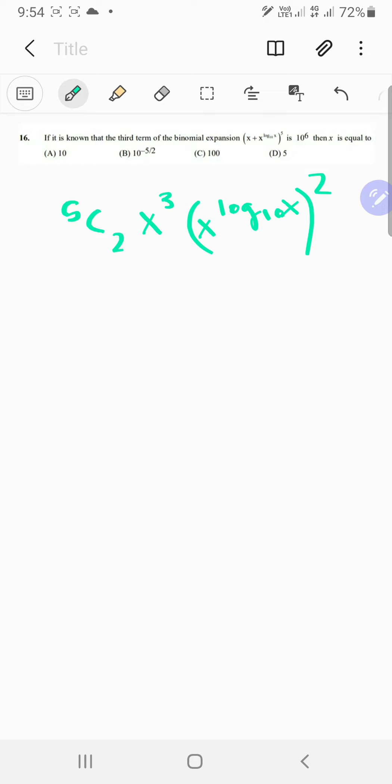So 5 choose 2, x cubed, and x^(2 log₁₀ x) squared, and we are given that this is actually 10^6. Then x is equal to...